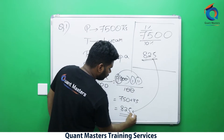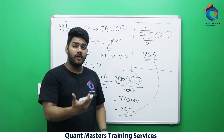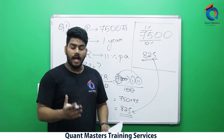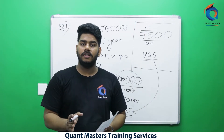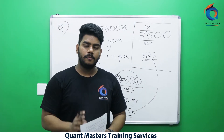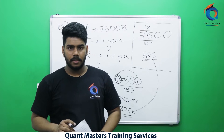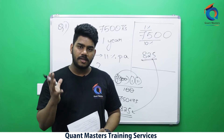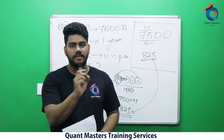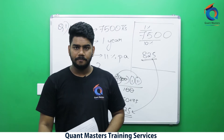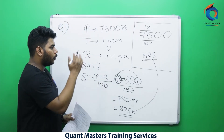We are getting the same answer — ₹825 — in a faster way. I will solve simple interest and compound interest not using formulas but using the percentage concept. Using this concept we can understand the question better and solve it in the fastest way possible. Please take down both methods.